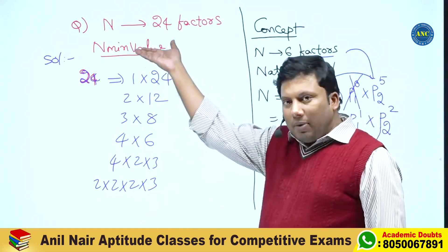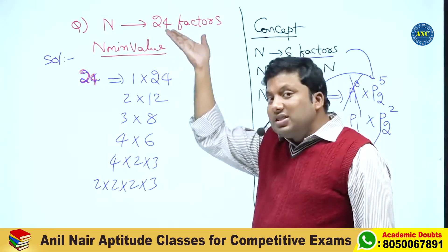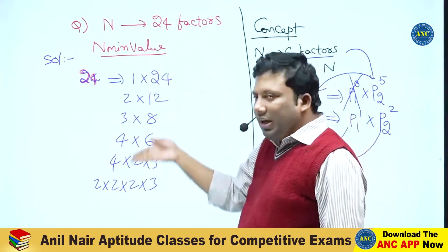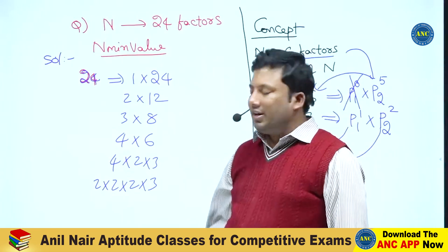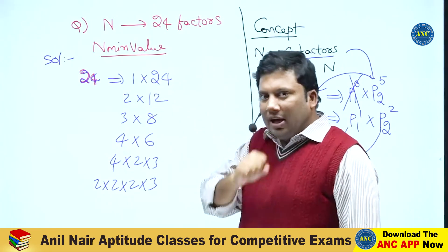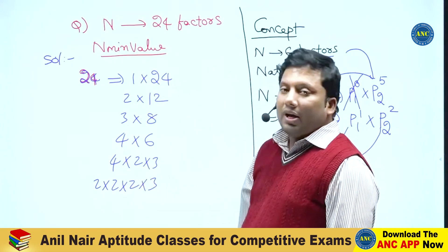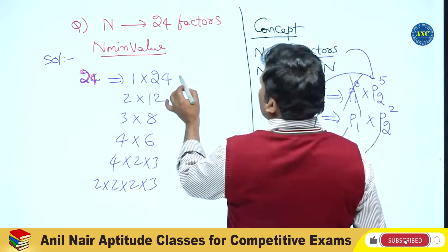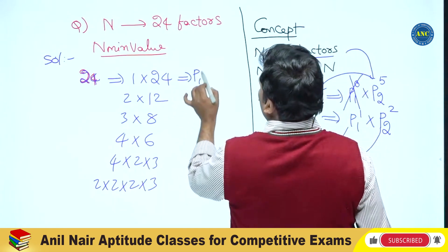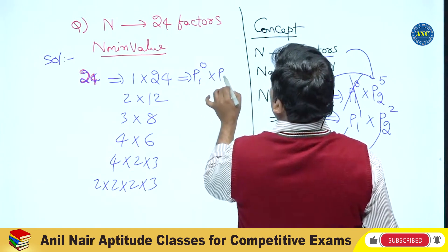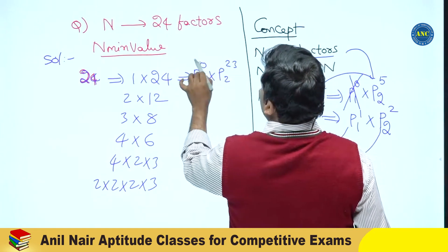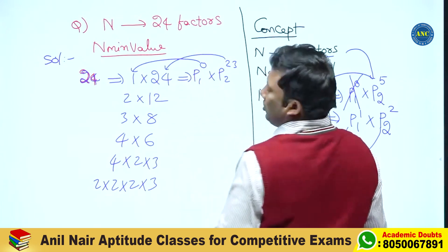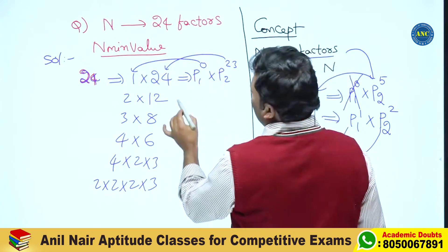If the number of factors are given, decompose the number — keep decomposing till you get prime numbers. If it is 1, the power will be 0. If it is 24, the power will be 23 — from 0 to 23 that's 24 cases.